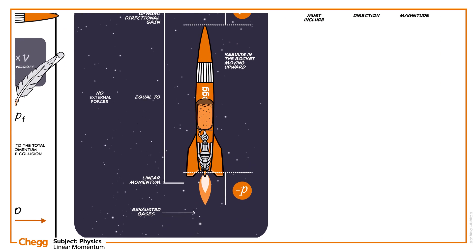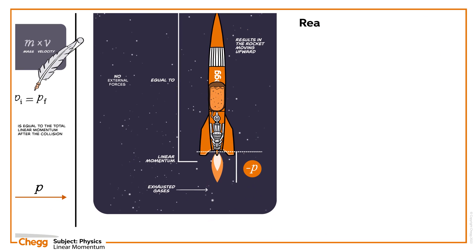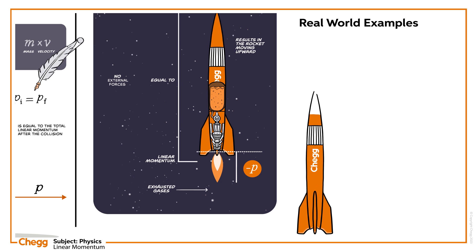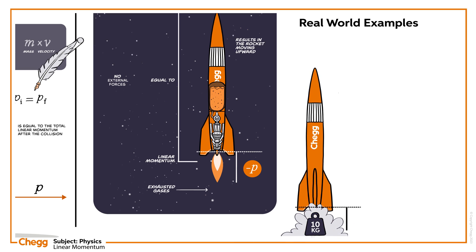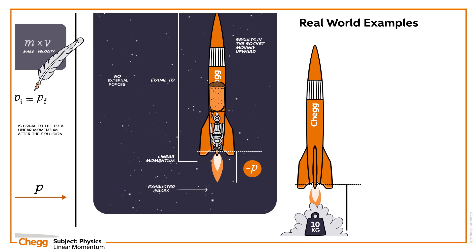Finally, let's take a real-world example. Assume a rocket exhausts 10 kilograms of gases from its nozzle with a velocity of 100 meters per second in the downward direction. In this case, what is the upward momentum gained by the rocket for its propulsion?